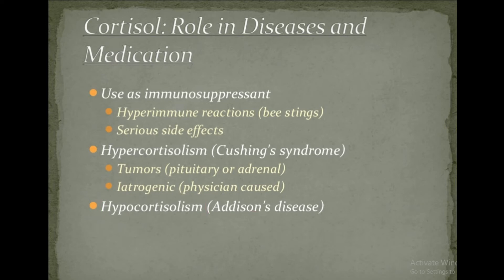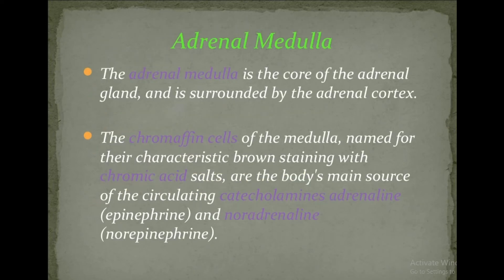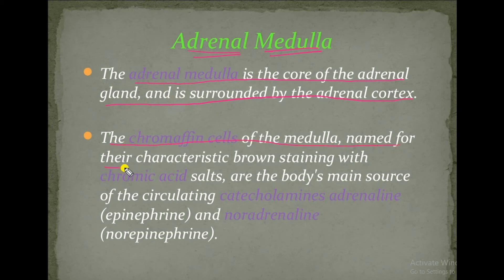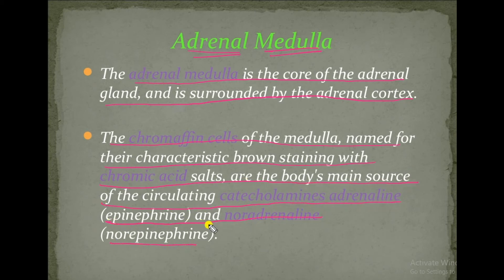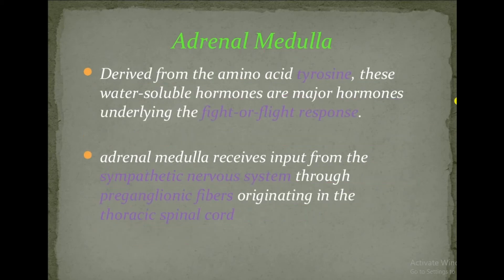The adrenal medulla is the core of the adrenal gland and is surrounded by the adrenal cortex. The chromaffin cells of the medulla, named for their characteristic brown staining with chromic acid salts, are the body's main source of circulating catecholamines — adrenaline and noradrenaline. These hormones are derived from the amino acid tyrosine and are water-soluble.